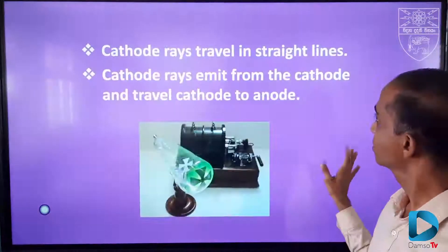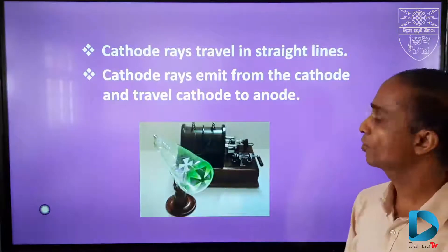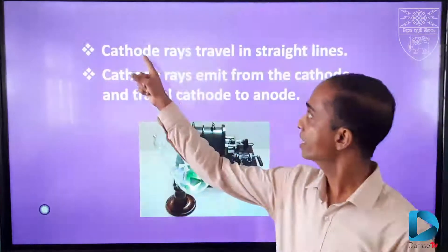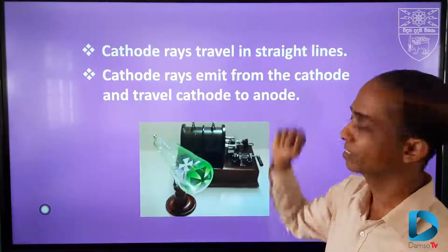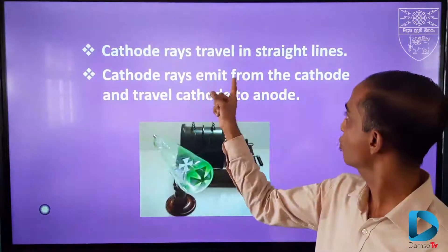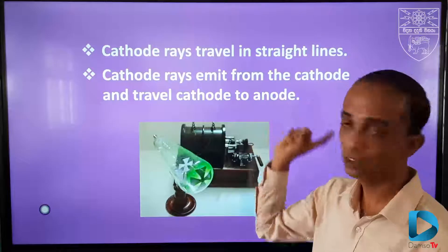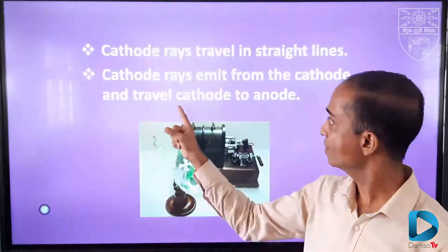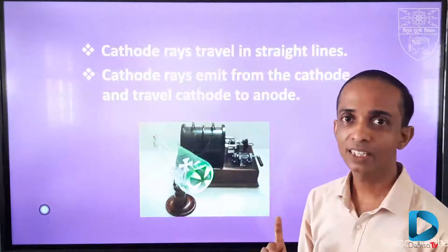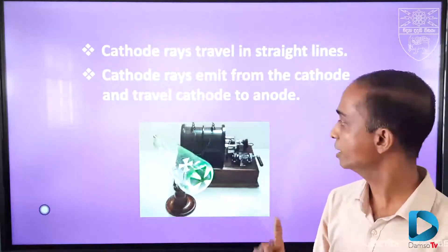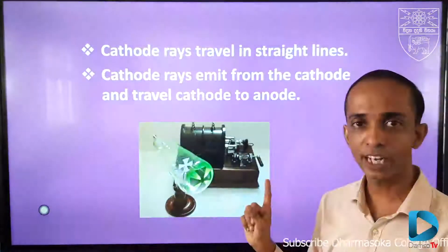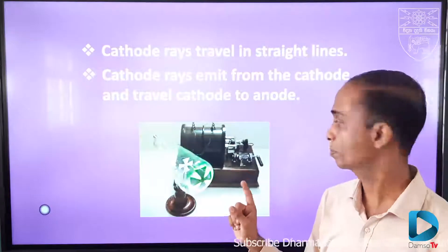Let's check the properties of cathode rays. Cathode rays travel in a straight line and emit from the cathode, travelling from cathode to anode. This property we can check by using this type of cathode ray tube.